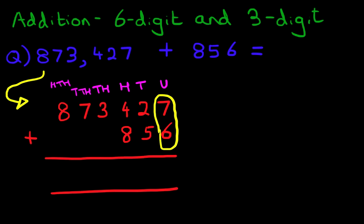The column on the right-hand side is the units. Units are 7 plus 6. So what is 7 plus 6? It's nice and easy. It's 13. Let's write that down. Put 1 here and 3 here.